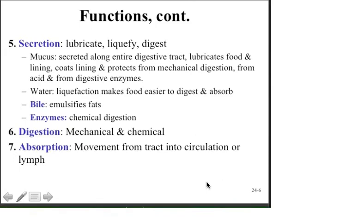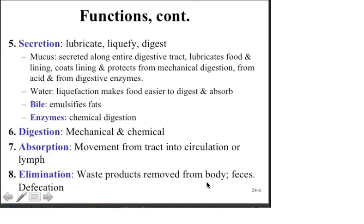Absorption is simply the movement from the tract into the circulation or into the lymph. The amino acids and simple sugars go into the blood, while derivatives of the fat in your diet end up in the lacteals and in the lymphatic system. Elimination is the removal of waste products from the body. Once we've extracted the useful biological energy from the food, the remaining organic material must exit via the colon, rectum, and anus. Bacteria resident in the colon facilitate chemical breakdown of fecal material, and in turn provide benefits — producing B vitamins and vitamin K, which are critical in blood clotting and metabolism.